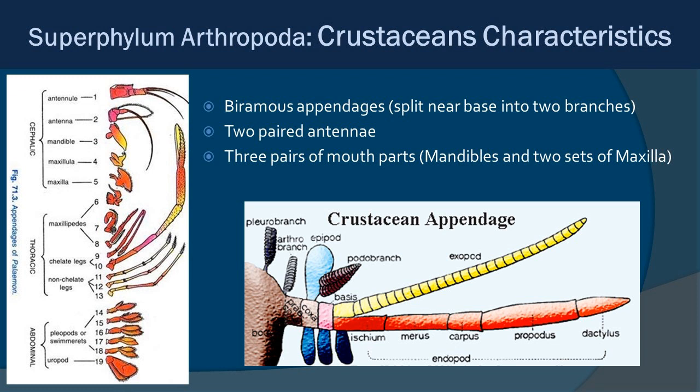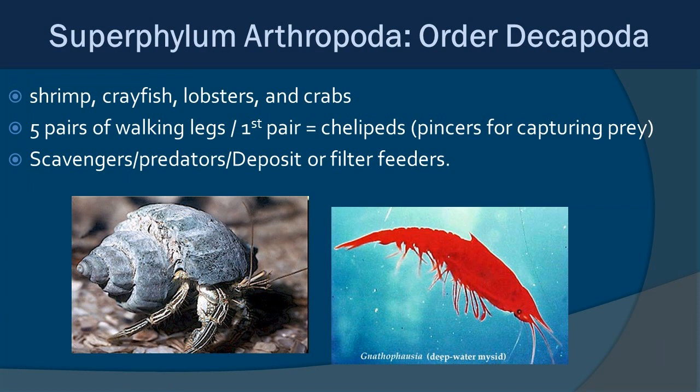Crustaceans have biramous appendages — split near the base into two branches. They also have paired antennae and three pairs of mouthparts: mandibles and two sets of maxillae. Within subphylum Crustacea, order Decapoda includes shrimps, crayfish, lobsters, and crabs, characterized by five pairs of walking legs. The first pair are chelipeds with pincers for capturing prey. Feeding habits are varied: scavengers, predators, deposit feeders, and filter feeders.